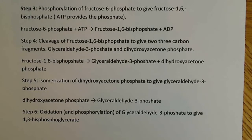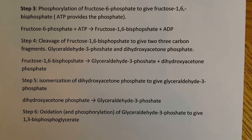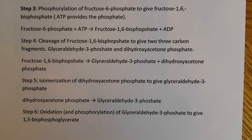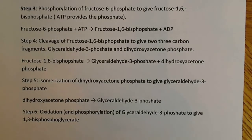Step four is cleavage — we cleave a bond of fructose-1,6-bisphosphate to give two three-carbon fragments: glyceraldehyde-3-phosphate and dihydroxyacetone phosphate. Step five is just an isomerization because we don't want dihydroxyacetone phosphate — there's not much we can do with it. What we need is glyceraldehyde-3-phosphate to continue going through the process. So step five is an isomerization of dihydroxyacetone phosphate to glyceraldehyde-3-phosphate.